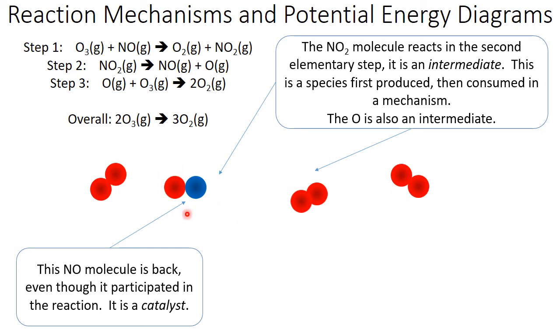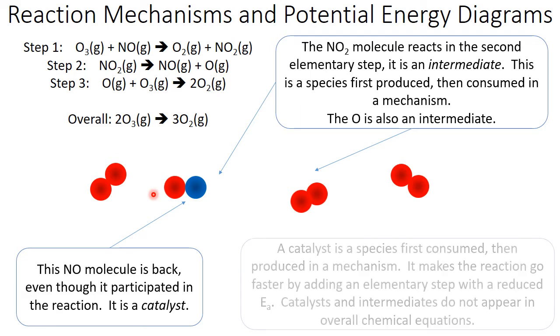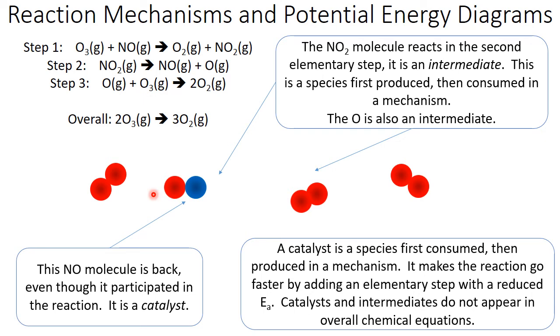Take note that our NO molecule is back, even though it participated in the reaction. This makes it a catalyst. Catalysts are species that are first consumed, then produced in a mechanism. And we see that our NO is consumed in step one and then produced in step two.